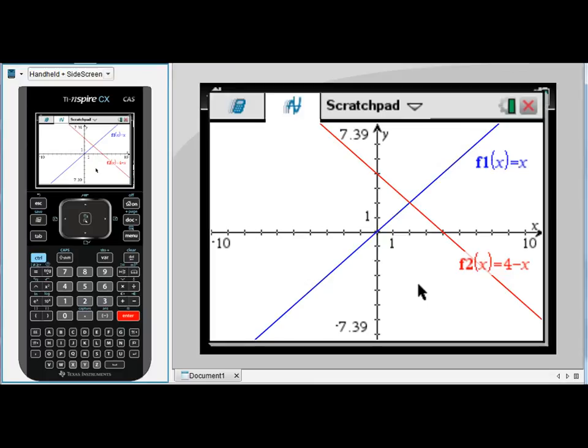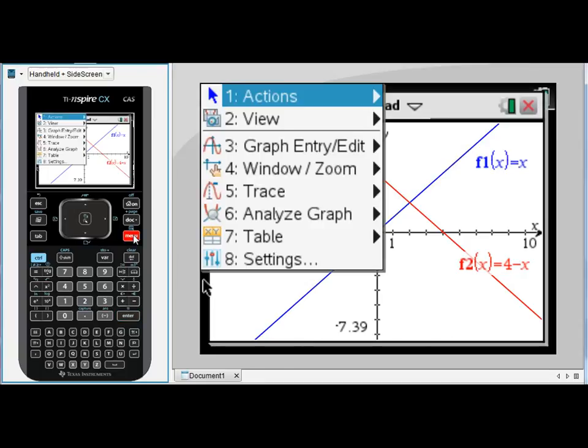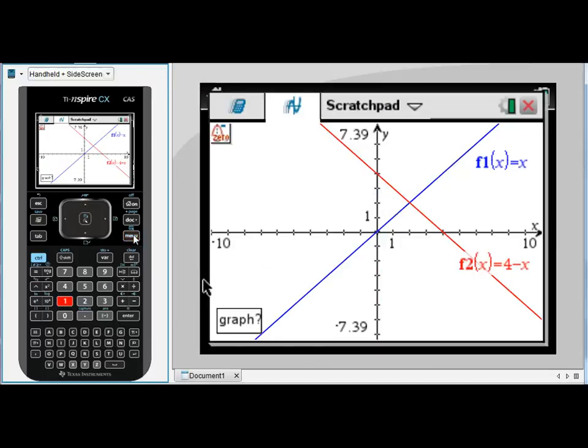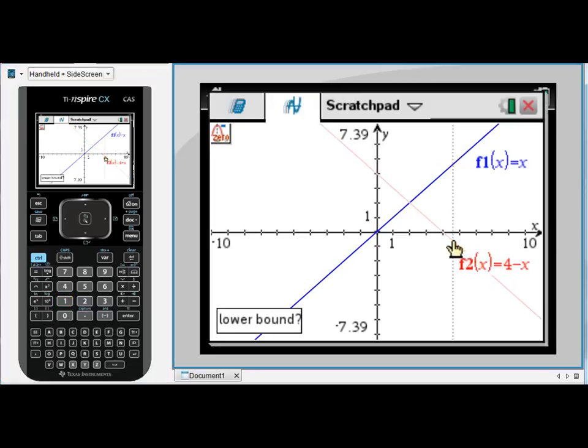There are a couple of things to be wary of when you've got two functions. If I were to find the x-intercepts, menu 6, 1 for zeros, it asks me a different question now. The first thing it's going to ask me is which graph are you trying to find the x-intercept for? Whenever you've got more than one graph it will ask you this. You can select the graph by just clicking on it, and then choose somewhere to the left and somewhere to the right to find that point.